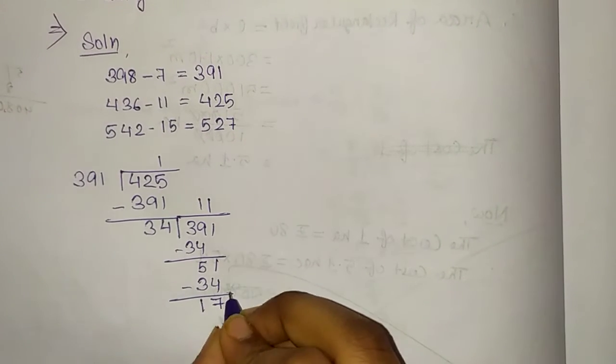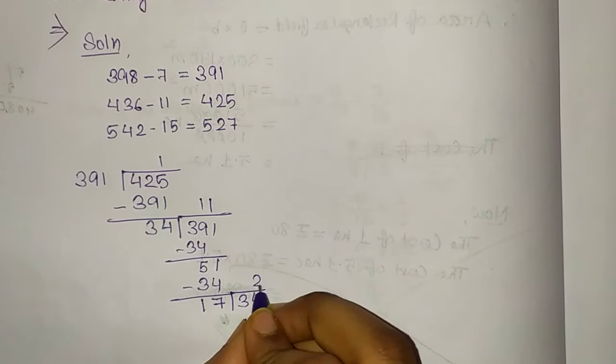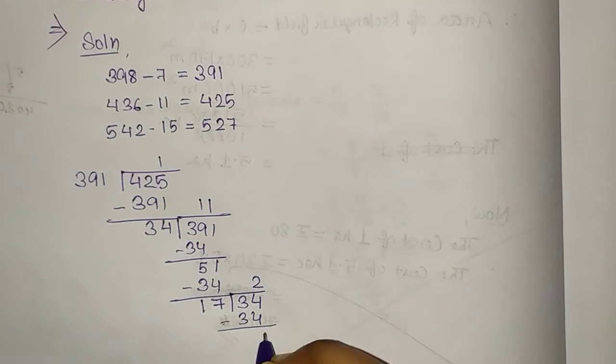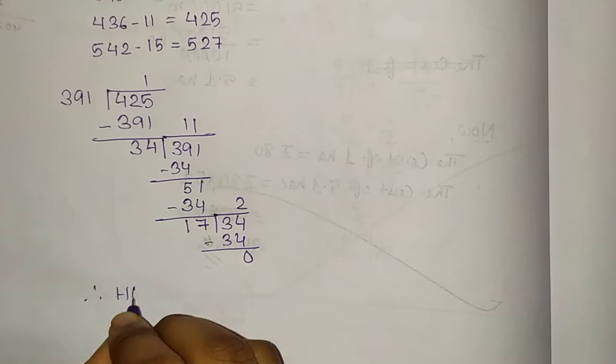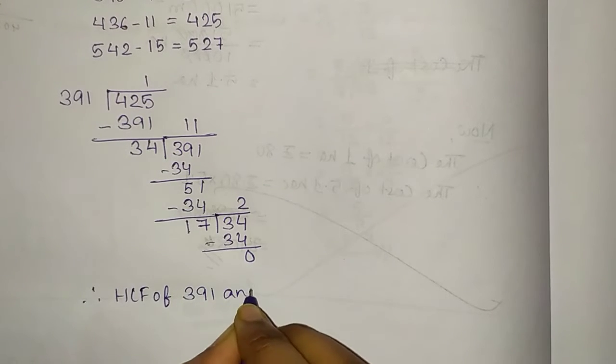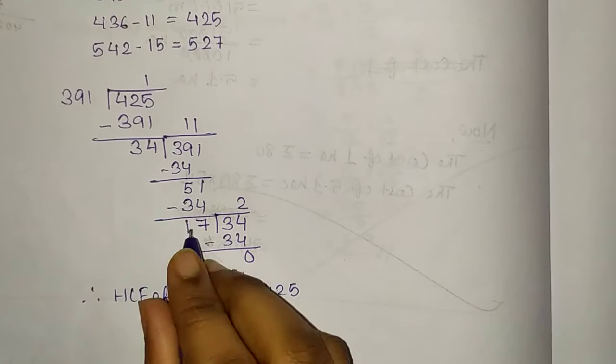Now, again 17 will get quotient 2, so 17 times 2 gives 34, then it will come 34, then minus 0. Now see, therefore, HCF of 391 and 425 equals 17.